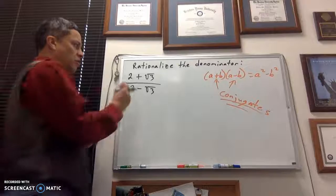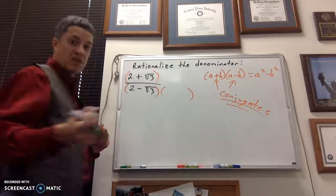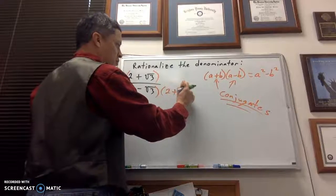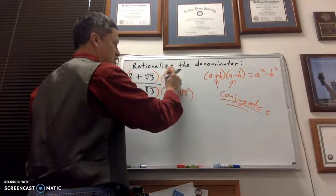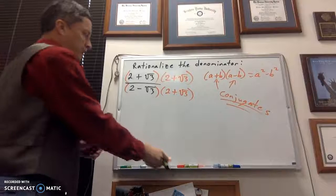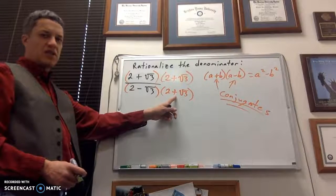All right, well, what's the conjugate going to be? If you said 2 plus root 3, you're spot on. 2 plus the square root of 3 is what's going to get multiplied to the numerator and denominator, right? So, you're looking at the denominator, and you just change that middle sign, that's all you do.